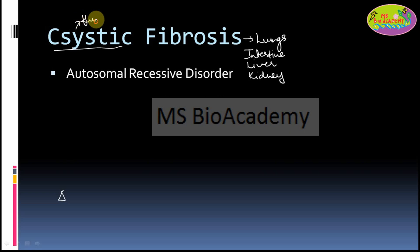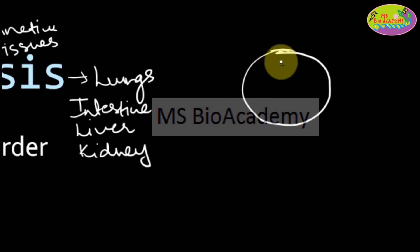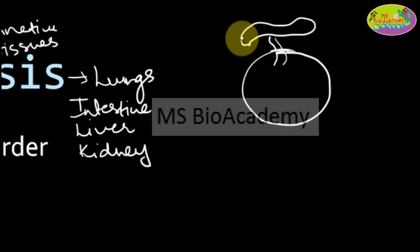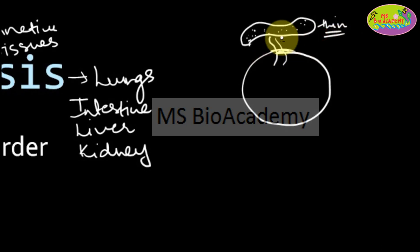What happens in cystic fibrosis? As the word suggests, 'cystic' means a fluid-filled sac, and 'fibrosis' means connective tissues are being formed. Normally, this epithelial cell secretes a secretion that forms mucus. Mucus normally contains water, so it is thin in nature.